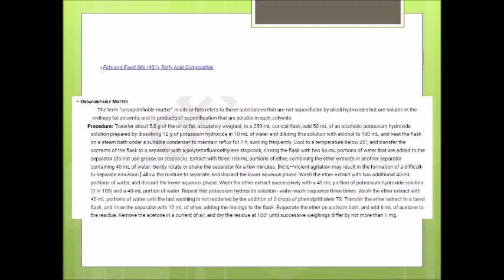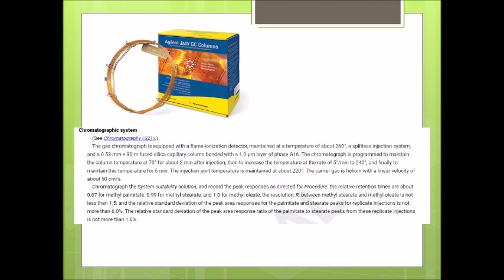Following the saponification, the fatty acids from polysorbate 60 are taken off and become methylated. You end up having methyl stearate or methyl palmitate in the mixture, and you do the quantitation with GC.